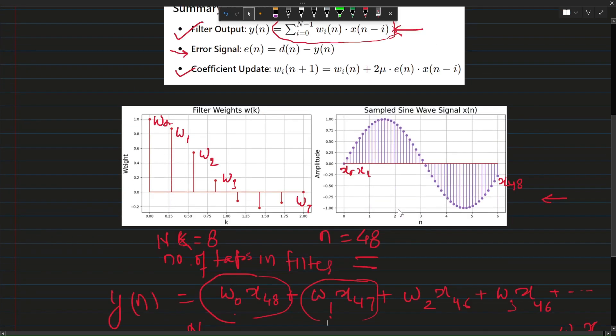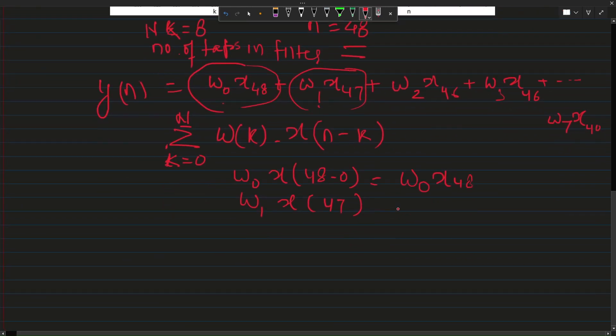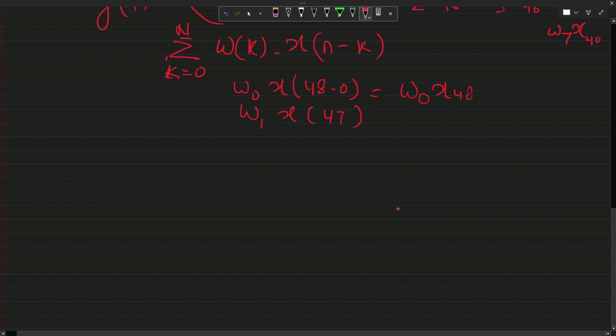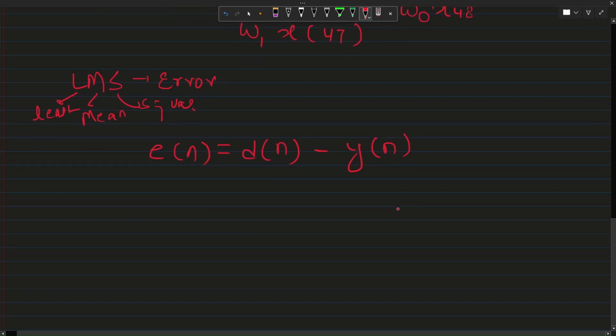Now come to this coefficient update equation. This is very important and comes from least mean square algorithm. As the name suggests, least mean square. There is something to do with least and something to do with mean and something to do with square. What it is doing is operating on the error signal.